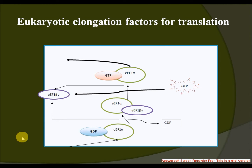The first is eEF1, which has two subunits: alpha and beta-gamma. Alpha acts as the counterpart to prokaryotic EF-Tu, mediating the entry of the aminoacyl-tRNA into the A site of the ribosome. Beta-gamma acts as the counterpart to prokaryotic EF-Ts, serving as the guanine nucleotide exchange factor for alpha, catalyzing the release of GDP from alpha.